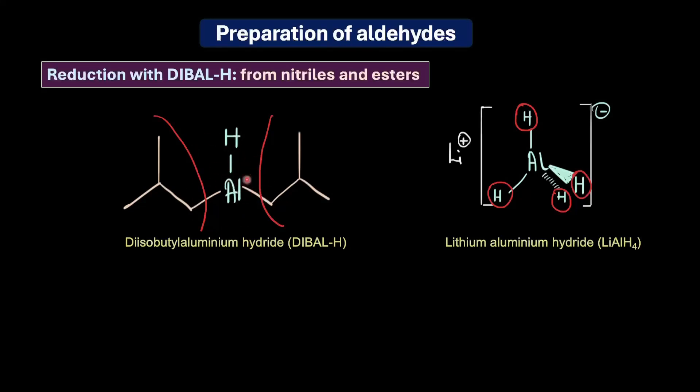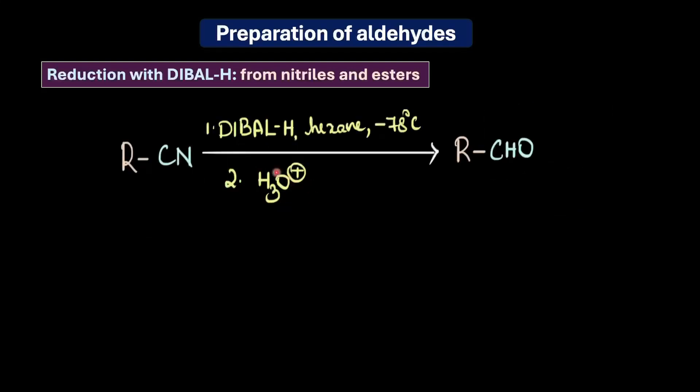If you look at the reaction conditions, we can see that to prepare aldehydes from nitriles, the reaction is carried out at a very low temperature, minus 78 degrees Celsius, followed by work-up with dilute acid or water to hydrolyze the intermediate. In the first step of reaction with DIBAL-H, we get an imine intermediate which on hydrolysis gives us the corresponding aldehyde.